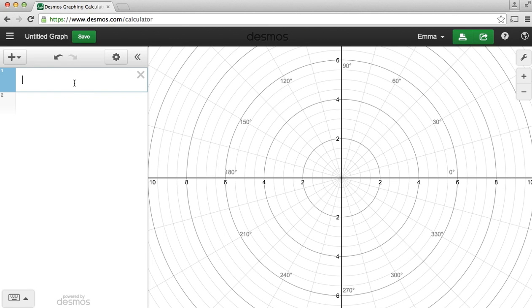Some polar graphs are quite simple, like r equals 3. That just graphs a circle of radius 3 that centers at the origin, but we can also make our polar graphs based off an angle.